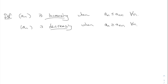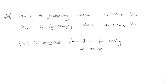The word monotone, in ordinary English, means something like 'always does the same thing.' In mathematics, we say a_n is monotone when it is either increasing or decreasing. So when I say monotone, that means it either always increases or it always decreases.